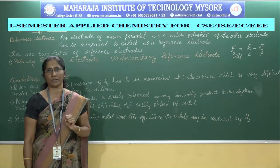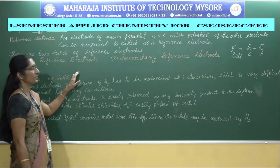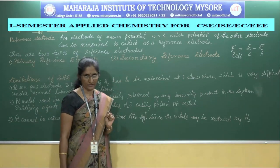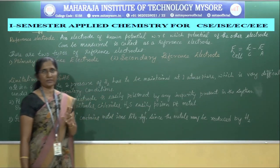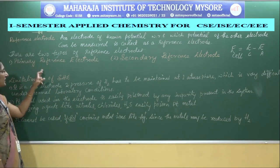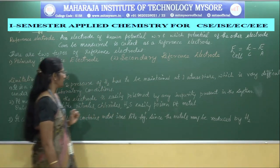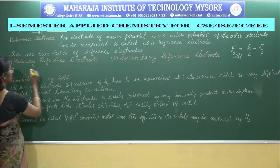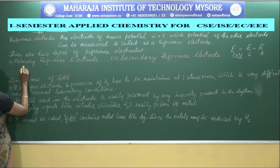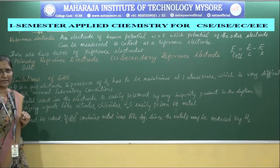There are two types of reference electrodes: primary reference electrode and secondary reference electrode. The best example of a primary reference electrode is the standard hydrogen electrode, abbreviated as SHE.